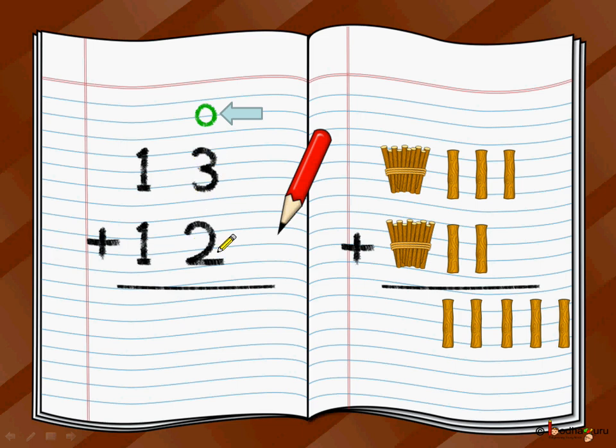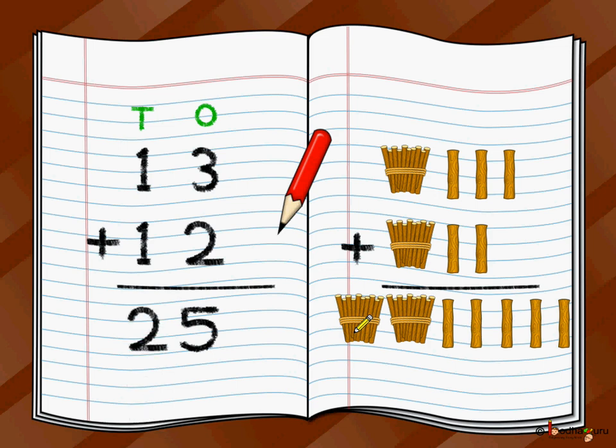we start from the ones place, we take 3 plus 2 is equal to 5. And then we move to the tens position that is the bundle, so we have 1 bundle, 2 bundles. Same thing we do on the left side which is 1 plus 1 is equal to 2.